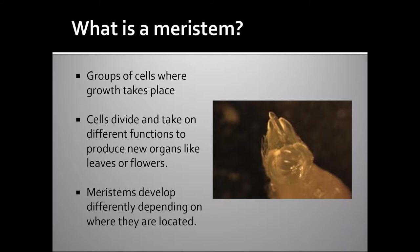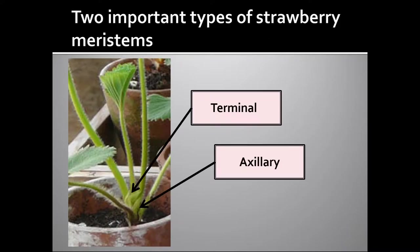Meristems develop differently depending upon where they're located on the plant. There are two important types of meristems in a strawberry plant: terminal meristem and axillary meristems. Each crown of a strawberry plant has one terminal meristem and several axillary meristems. There is an axillary meristem in the axil of each leaf, so the number of leaves you have will let you know how many axillary meristems you have.